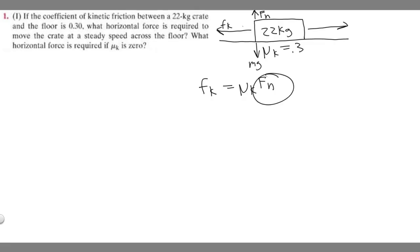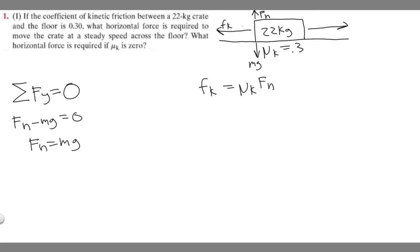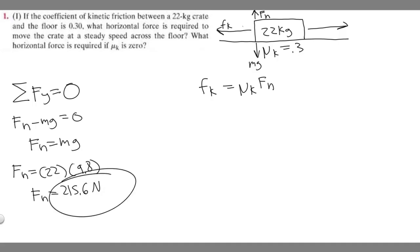To find the normal force, we use the sum of forces in the y direction equals zero, since the crate is moving at constant speed. So F sub n minus mg equals zero, which means F sub n equals m times g. That's 22 times 9.8, which gives us 215.6 newtons. That is our normal force.